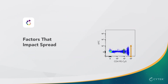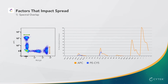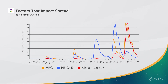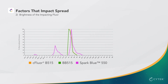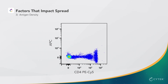Lastly, let's cover factors that impact spread in a multicolor sample. We just saw how spectral overlap can be used to predict spread between two fluorochromes. Another consideration is that spectral overlap can have an additive effect on spread, meaning that larger panels that include many highly overlapping fluorochromes have more potential for spread. The brightness of the impacting fluorochrome also contributes to spread. Here, Siglec B515 and Brilliant Blue 515 have almost identical normalized spectra, and the way they overlap with Spark Blue 550 is the same. However, because BB515 is brighter, it exhibits more spread into Spark Blue 550 than Siglec B515.